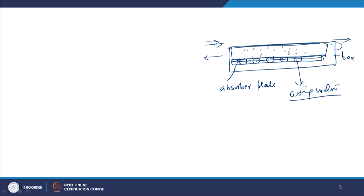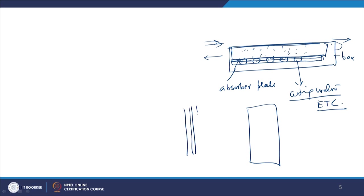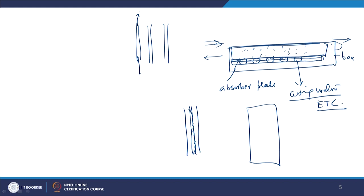The temperature of the cooling water rises and can be used for different applications. There is also an evacuated tube collector type, where instead of a flat absorber plate there are individual evacuated glass tubes. Inside each glass tube there is concentrically fixed a water tube, and there is an array of evacuated tubes on the bed. Water flows through and is collected in a tank. Evacuated tube collectors are more effective than flat plate collectors.